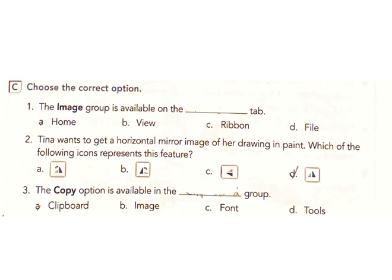1. The image group is available on the tab: a) Home, b) View, c) Ribbon, d) File. Answer: a) Home. 2. Tina wants to get a horizontal mirror image of her drawing in paint. Which of the following icons represents this feature? Icons a, b, c, d. Answer: d.